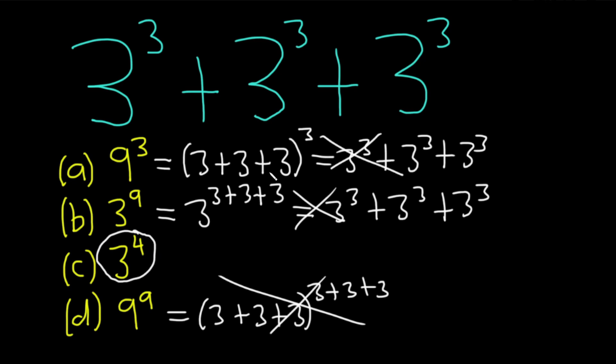So how do you get 3 to the 4th from this? Well, there's a couple of ways to do it. The way I did it, when I first saw this problem, immediately I did the following. Let me pick a different color here. Let me go back to blue. So I'm going to write the answer in blue. We have 3 cubed plus 3 cubed plus 3 cubed.